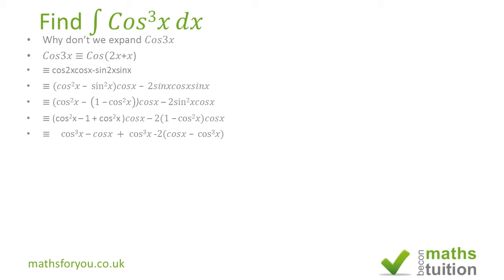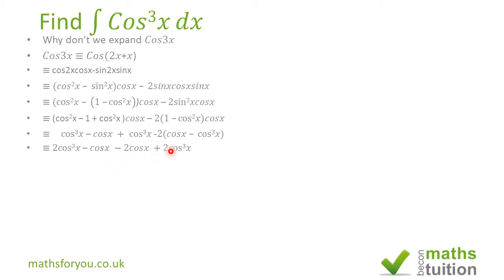Now we need to collect like terms and expand this part, opening up the brackets. We get minus 2cos(x) minus 3cos(x), and those two cos³x terms add up to give 4cos³x. So we've got 4cos³x minus 3cos(x).